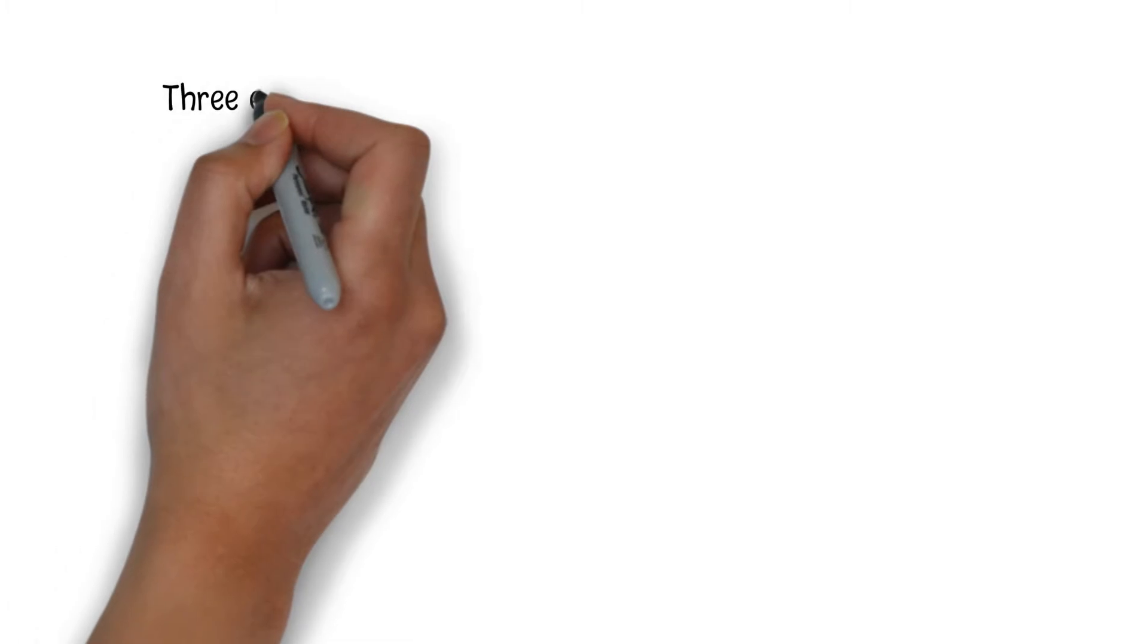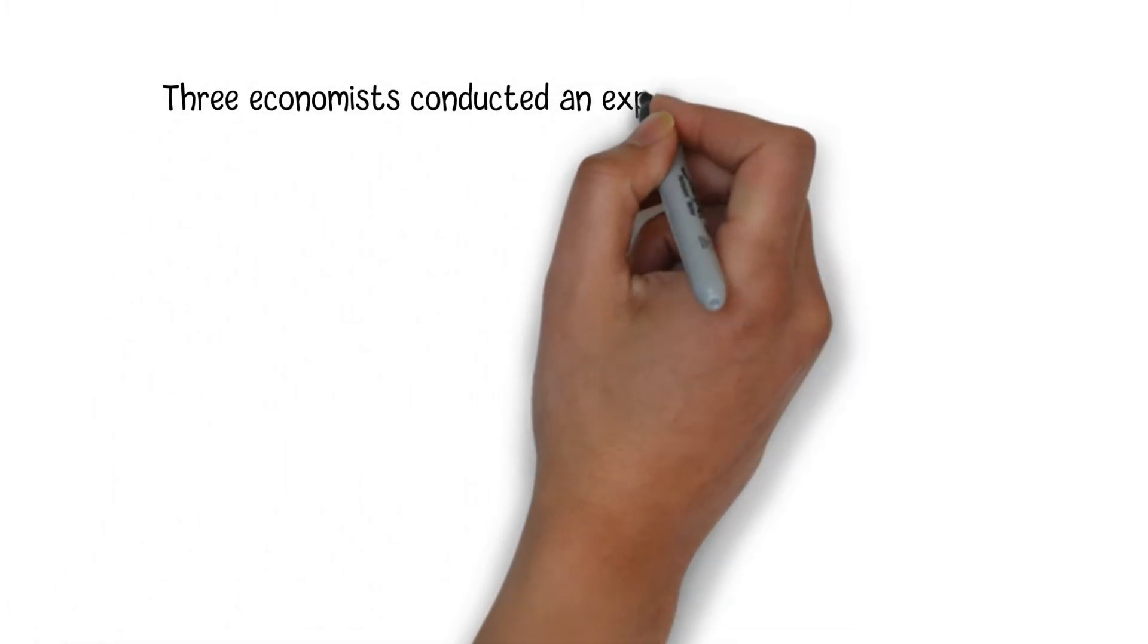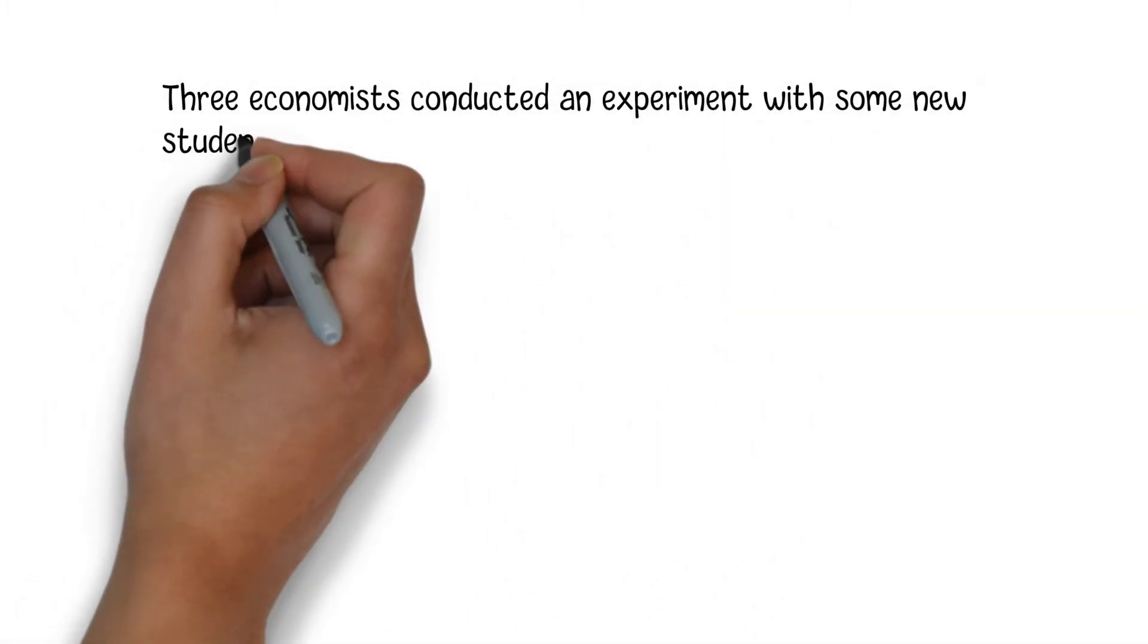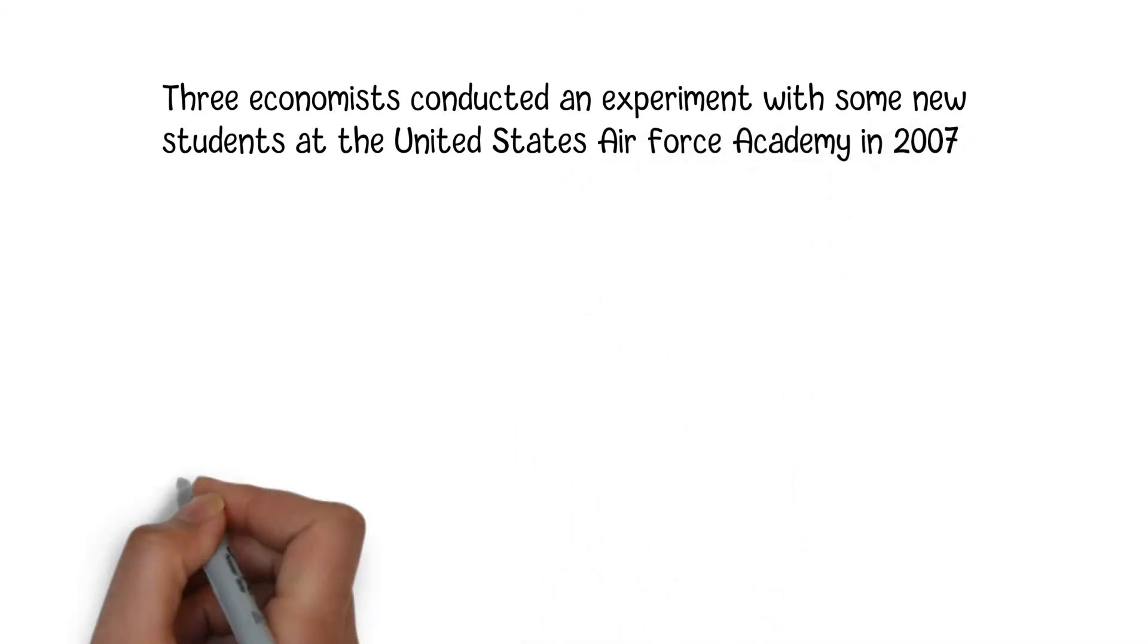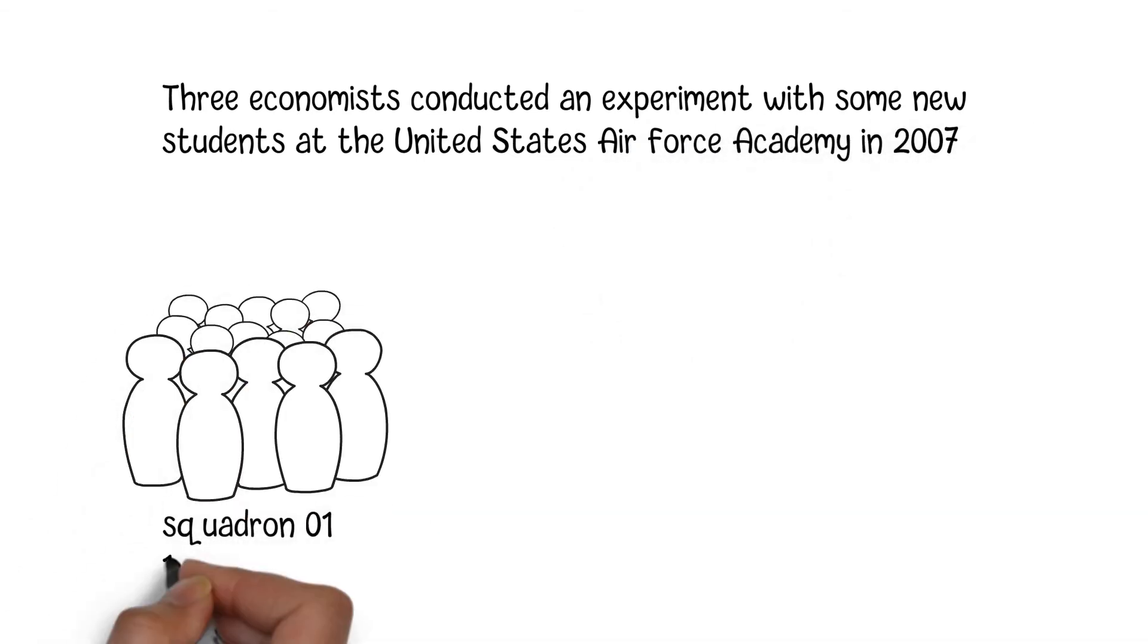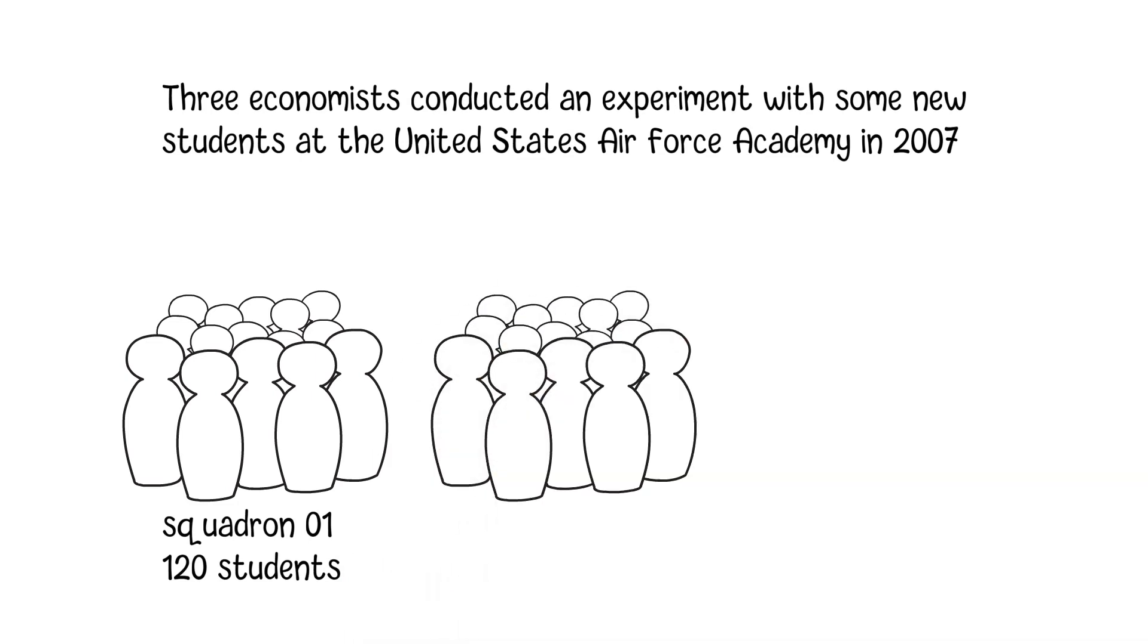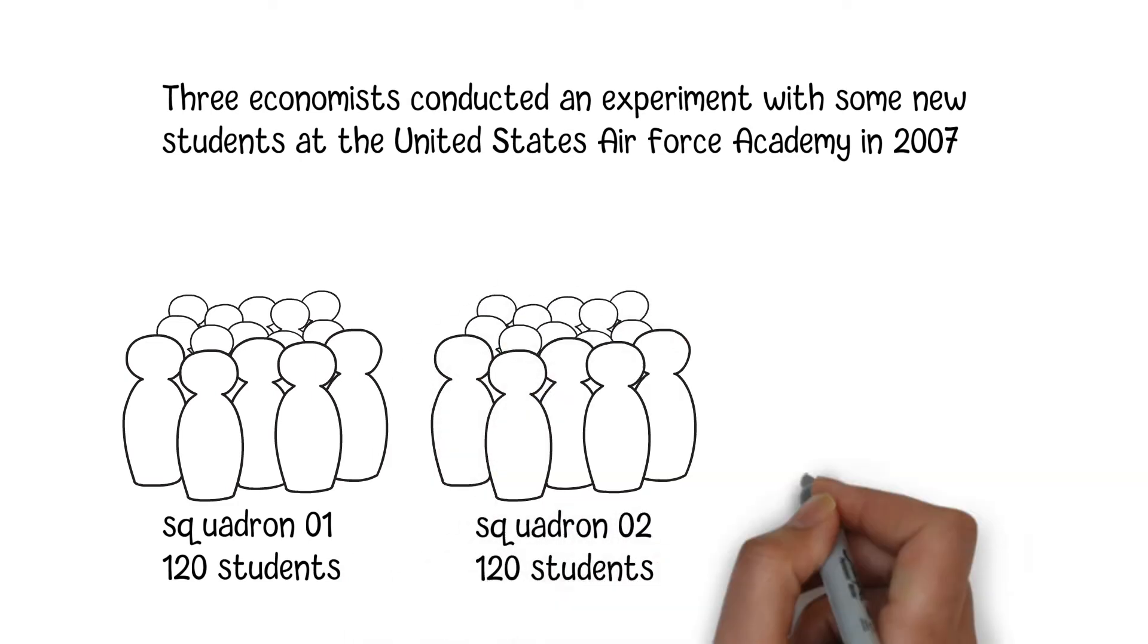In 2007, three economists, Scott Carroll, Bruce Sasserdote and James West, conducted an experiment with new students at the United States Air Force Academy, a military college in which all students are divided into several squadrons and each squadron has about 120 students.